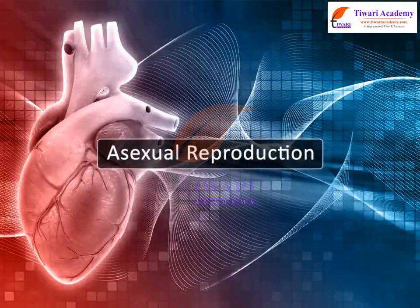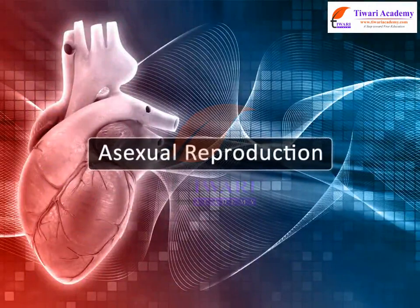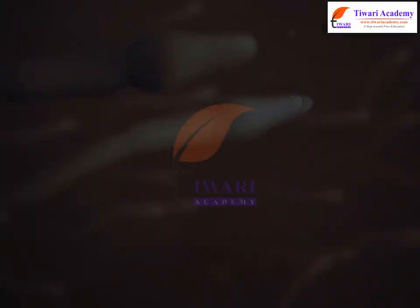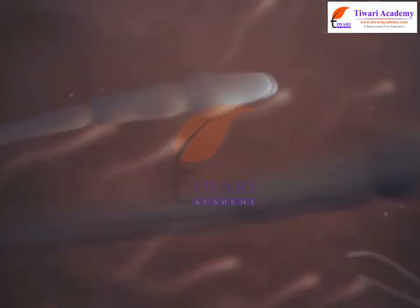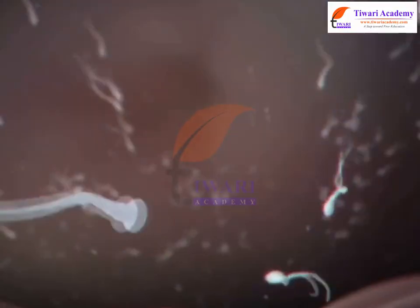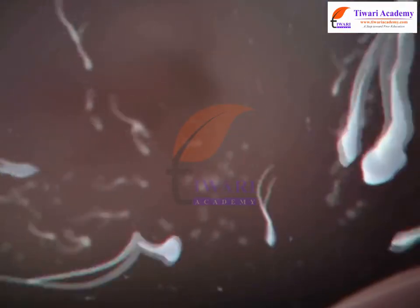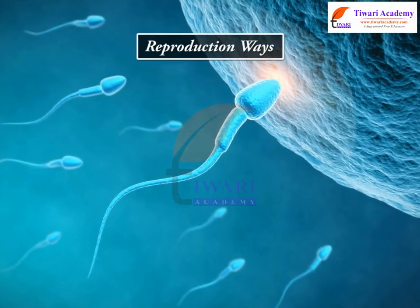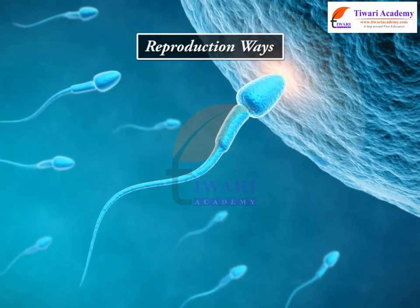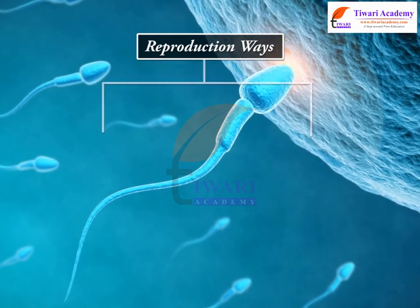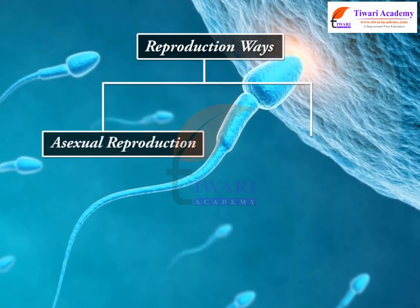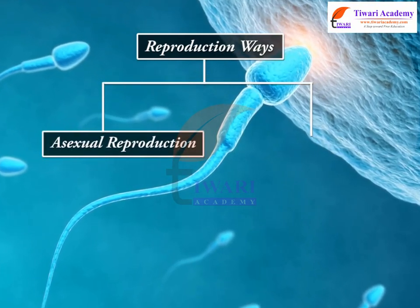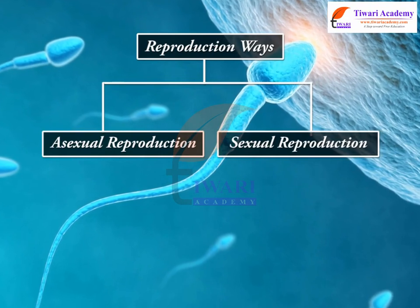Asexual Reproduction. Reproduction is the creation of a new individual or individuals from previously existing individuals. In animals, this can occur in two primary ways: through asexual reproduction and through sexual reproduction.